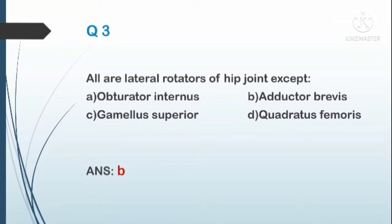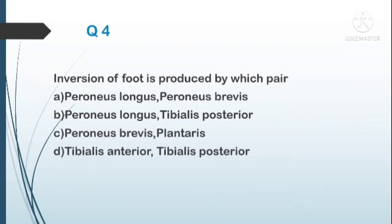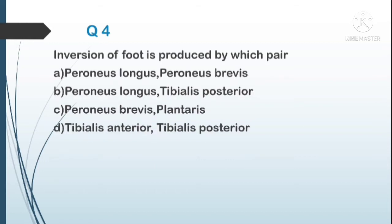All other muscles are lateral rotators. Question number four: the inversion of the foot is produced by which pair? A) peroneus longus and peroneus brevis, B) peroneus longus and tibialis posterior, C) peroneus brevis and plantaris, D) tibialis anterior and tibialis posterior. The answer is D, tibialis anterior and tibialis posterior.